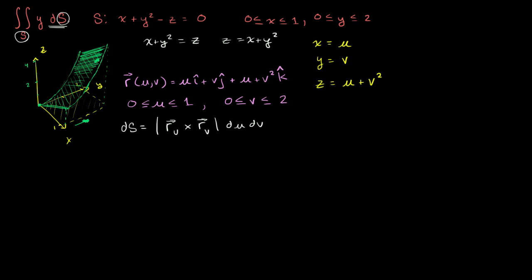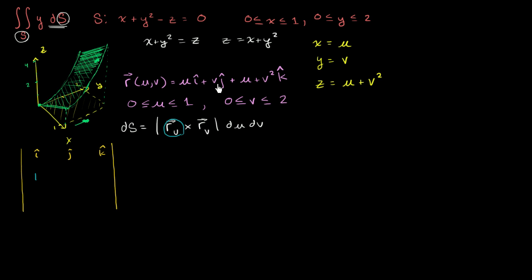I'll fill in what r sub u and r sub v is in the actual determinant. So first we have our components i, j, and k. Now let's think about what r sub u is — it's the partial of r with respect to u. Its i component is going to be 1, since the partial of u with respect to u is just 1. Its j component is going to be 0, since v does not change with respect to u. And the k component: the partial of (u + v²) with respect to u is just 1.